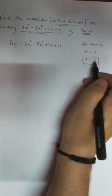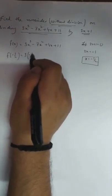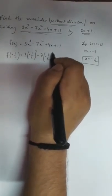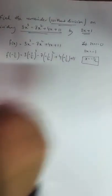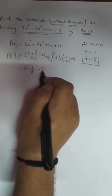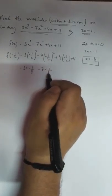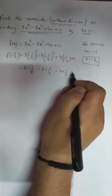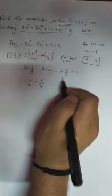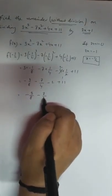We got the value of x as minus half. Now in this expression, in place of x we put minus half: 3(-1/2)³ - 7(-1/2)² + 4(-1/2) + 11. So 3 × (-1/8) - 7 × (1/4) - 2 + 11, which gives -3/8 - 7/4 - 2 + 11 = -3/8 - 7/4 + 9.